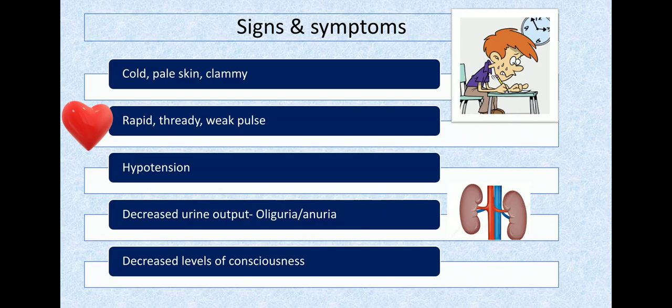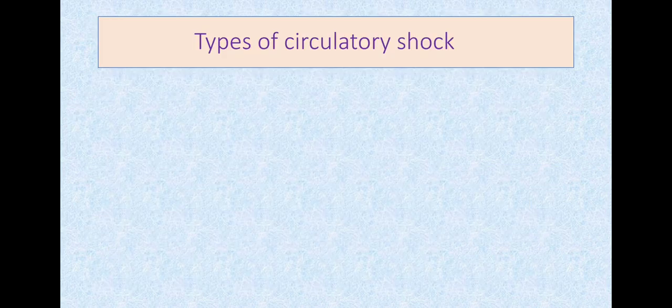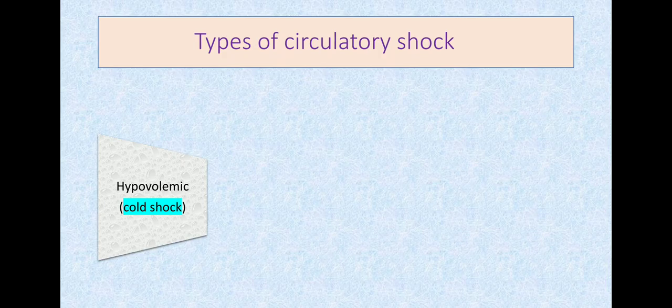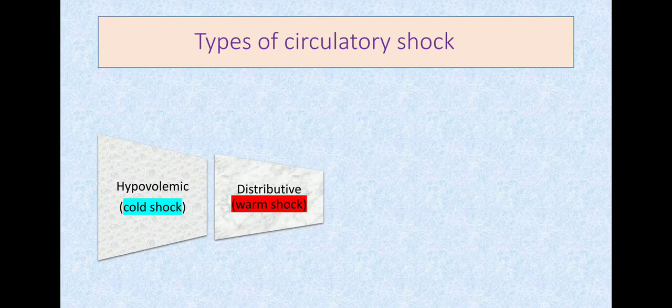The types include hypovolemic shock, also known as cold shock—the body is cold, pale, and clammy. Distributive shock, also known as vasogenic or neurogenic shock, is a type of warm shock. In contrast to hypovolemic, there's vasodilation and increased blood flow.